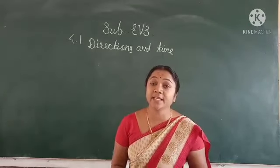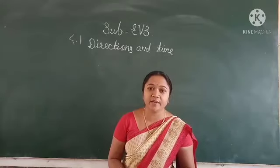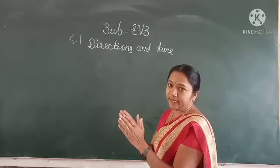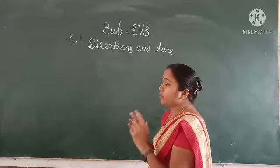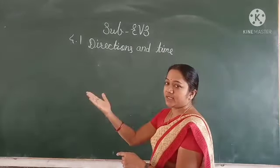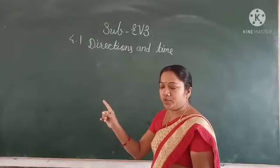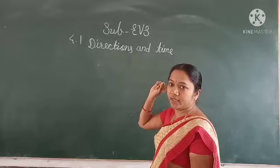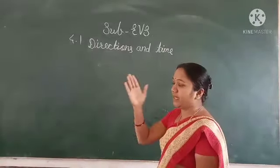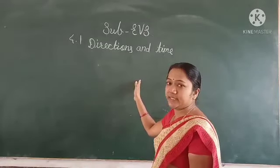So abhi direction kaise pehchana hai? So other directions, how to identify: uqte suraj ki taraf aap moong karke khare raho, face karke. So uqte suraj ki taraf jama moong karte ho, to aage wali, yani ki aapke moong ke saamne ko jo direction hooti hai, that is east. Aur aapke back side ko jo direction hooti hai, that is west. Aur uqte suraj ke taraf moong karke khare rehne ke baad, aapke right side ko jo direction hogi, that is south.